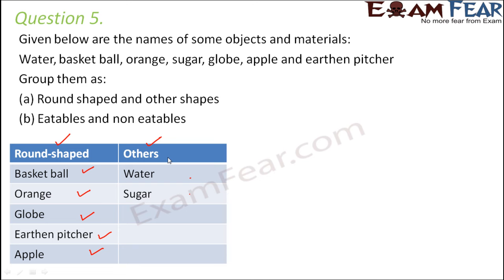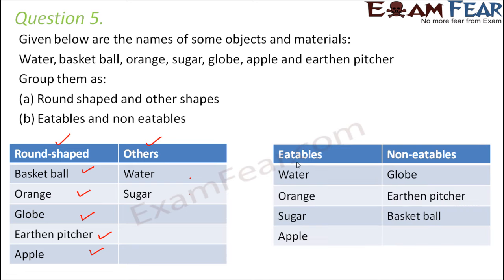Water and sugar are not round, so they are placed under the group 'others.' Next, grouping as eatables and non-eatables: water, orange, sugar, and apple are things we eat, but a globe, basketball, and earthen pitcher cannot be eaten, so those are the non-eatables. This is how we sort materials based on their properties.